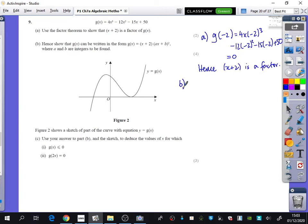Then part B says, hence show that g of x can be written in this form here. So what do I need to do to this polynomial that I have at the top? Long division. So I'm going to have my 4x cubed minus 12x squared minus 15x plus 50, and I'm going to divide that by x plus 2.